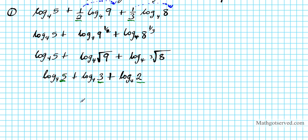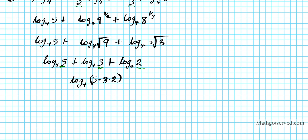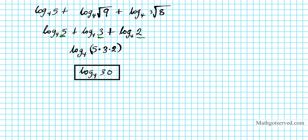So this expression becomes one unified condensed log: log base 4 of 5 times 3 times 2. The plus signs become products. Multiplying all three numbers gives us log base 4 of 30. That's the final condensed form of the original logarithmic expression.